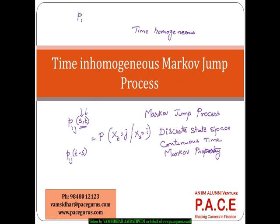It is as good as saying P_IJ(1,4) is the same as P_IJ(2,5), or it is even the same as P_IJ(10,13) in the case of a time homogenous process. The transition probability P_IJ from time s to time t depends only on the time interval. It does not depend on the actual time period.